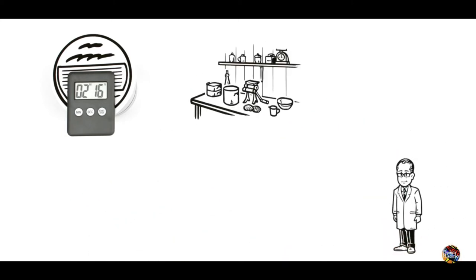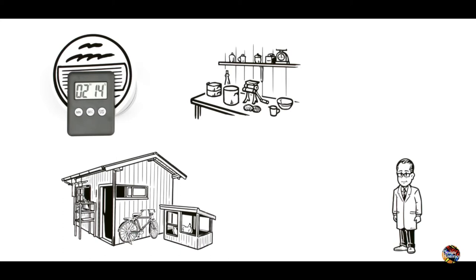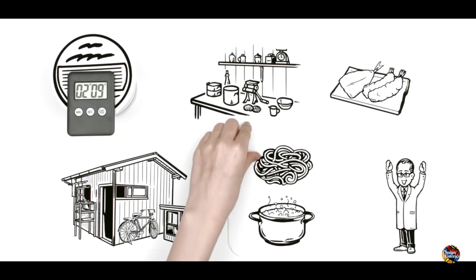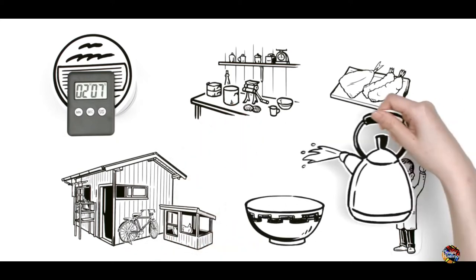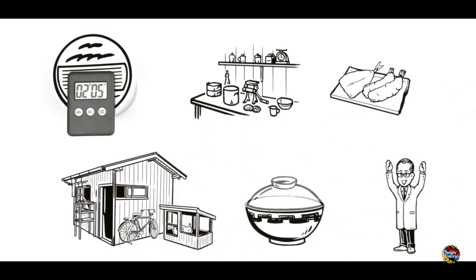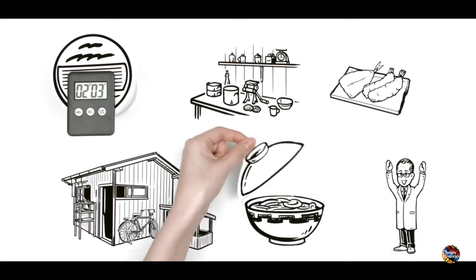He conducted many experiments in his garden shed. Inspired by tempura, he eventually developed a method for frying noodles in hot oil. Put these noodles in a bowl, simply add hot water, and they're ready to eat. This was the first instant ramen.